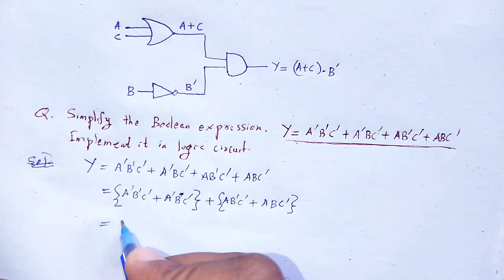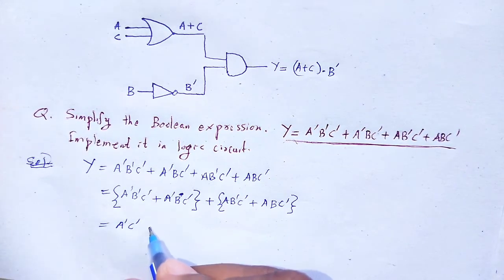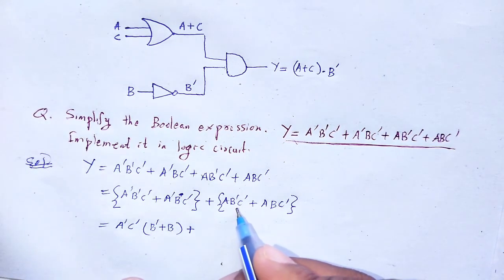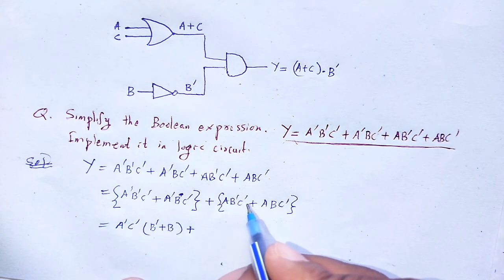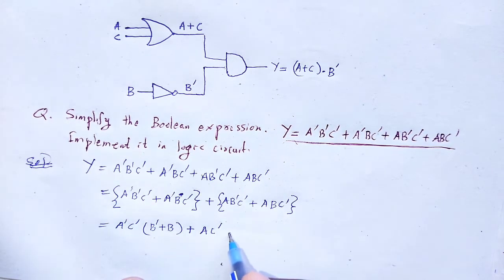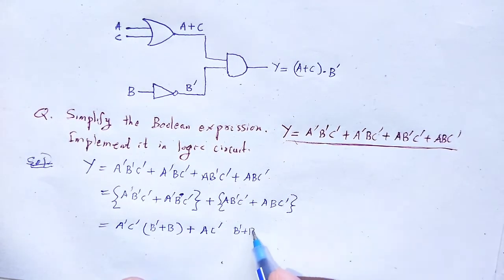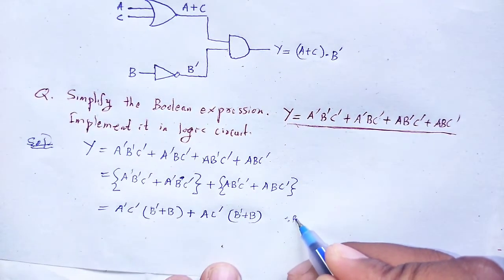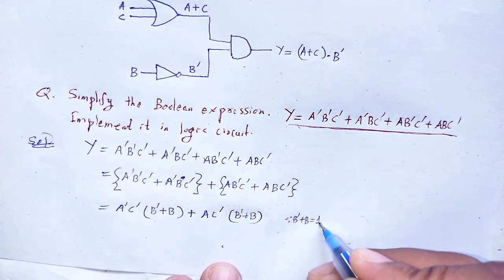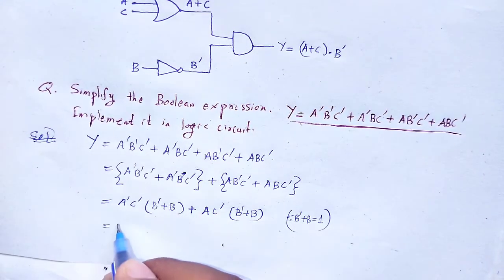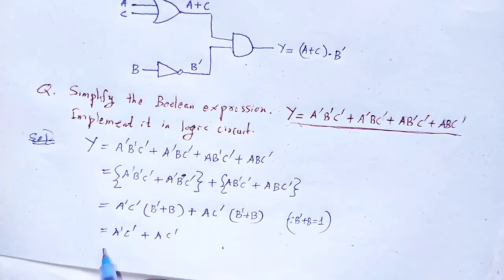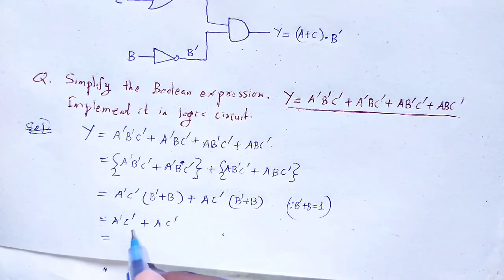Taking A'C' as common from the first group, we get A'C'(B' + B). Taking AC' as common from the second group, we get AC'(B' + B). Since B' + B = 1, this simplifies to A'C'·1 + AC'·1 = A'C' + AC'.